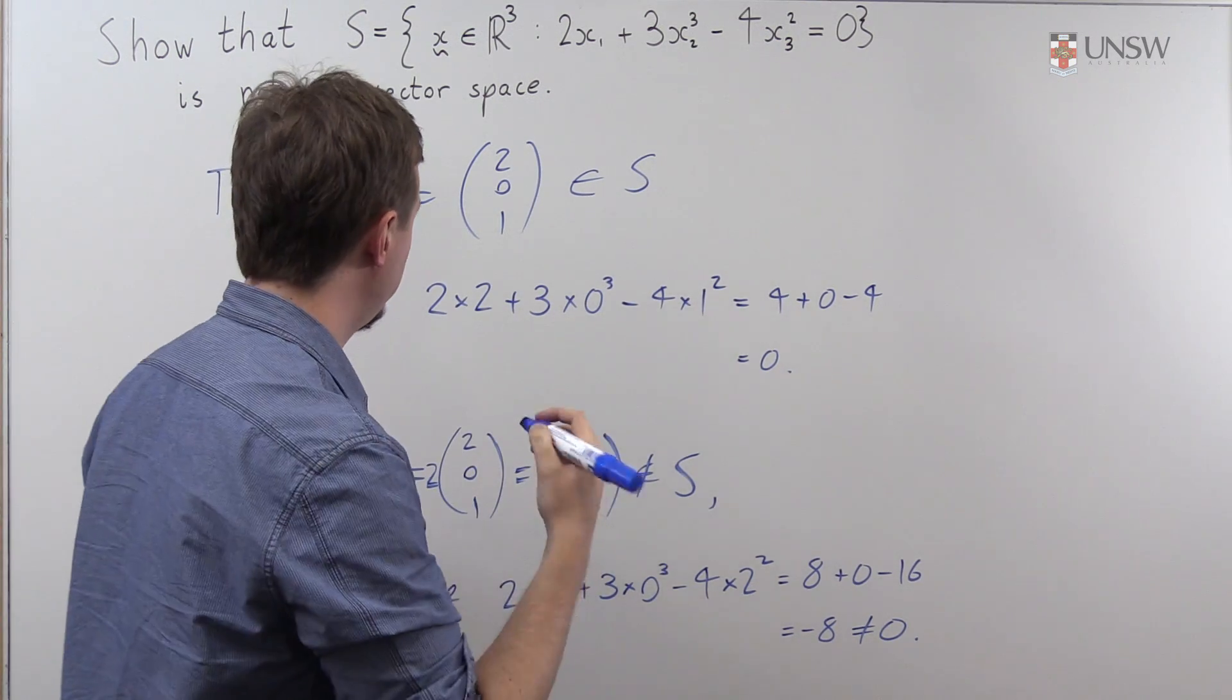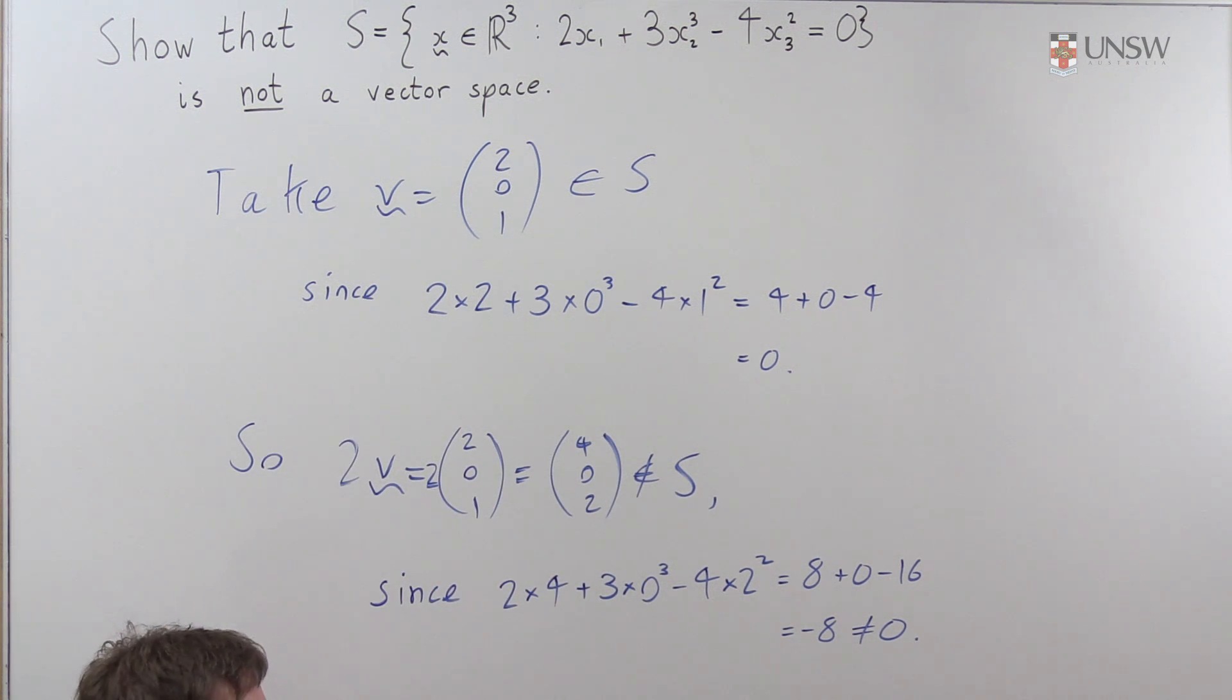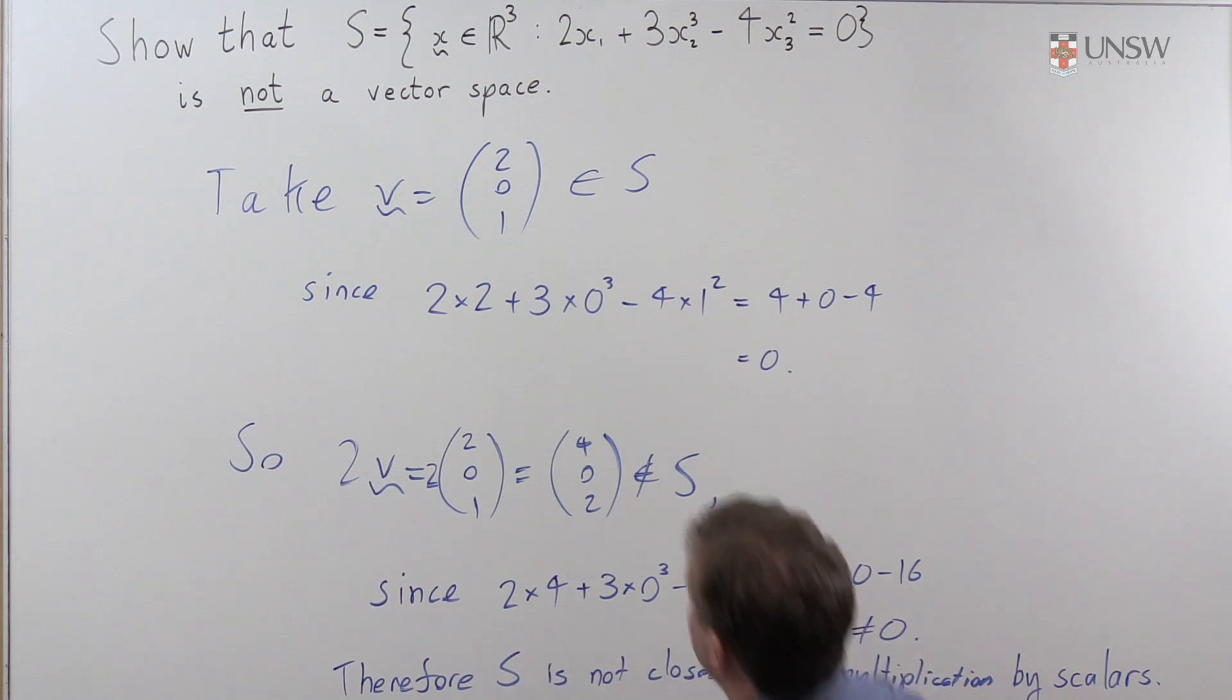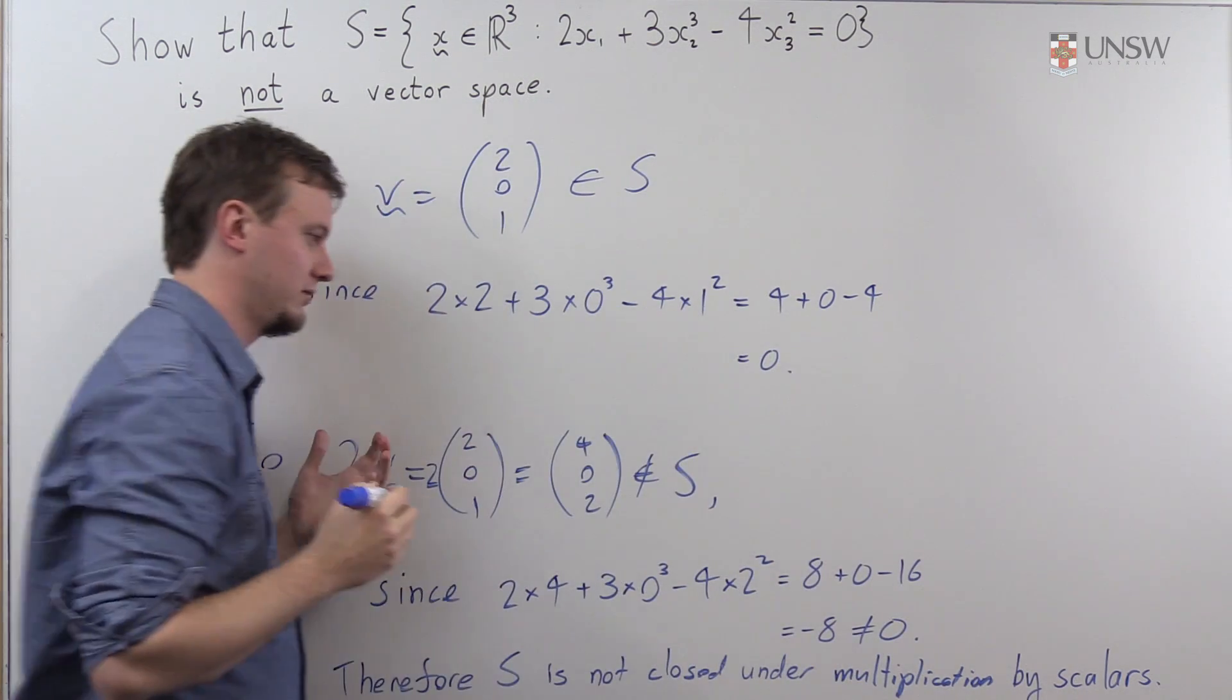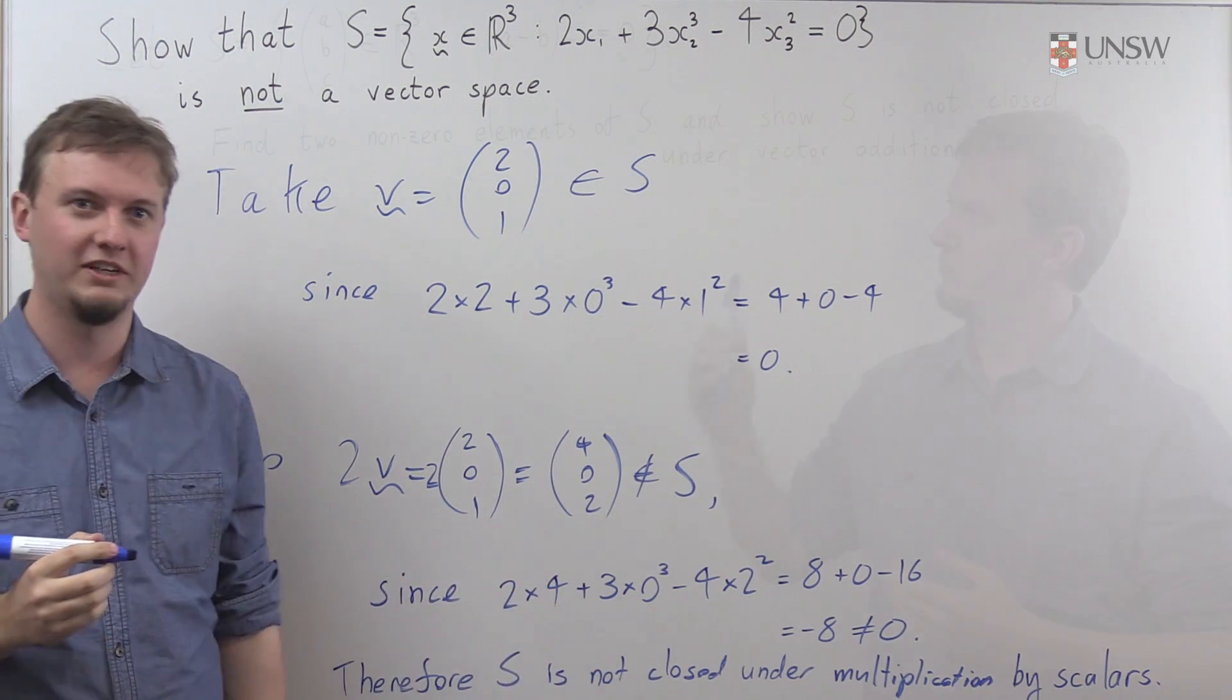Therefore, S is not closed under multiplication by scalars. So let's write that down. And therefore, it's not a vector space. Because this is an axiom which is failing.